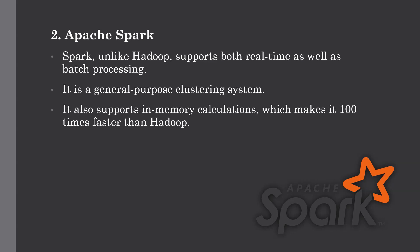To tackle these problems we have Apache Spark. Apache Spark can be considered a successor of Hadoop as it overcomes those drawbacks. Unlike Hadoop, it supports real-time processing as well as batch processing. It is a general purpose clustering system and it also supports in-memory calculation, which makes it way faster than Hadoop. This is made possible by reducing the number of read-write operations to disk. It provides more flexibility and versatility as it works with different data storage systems such as HDFS, OpenStack, and Cassandra.